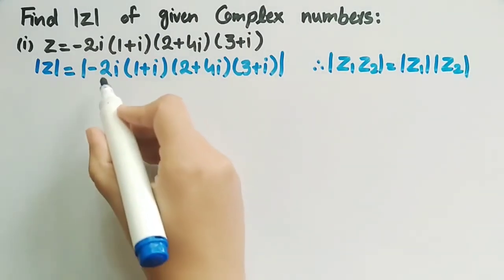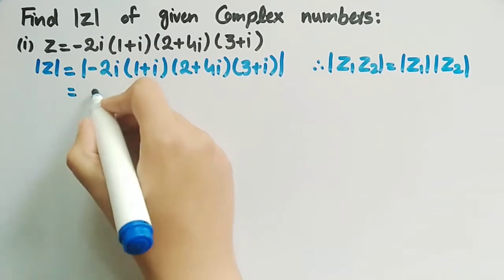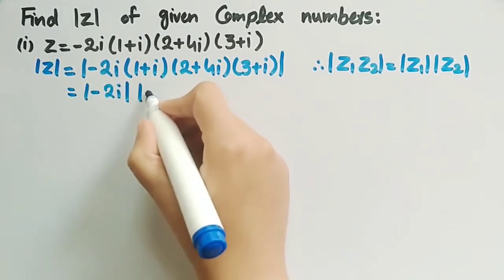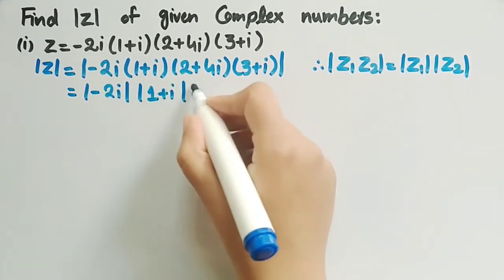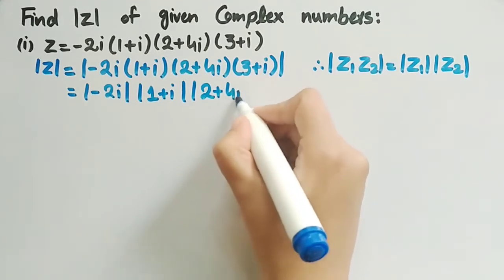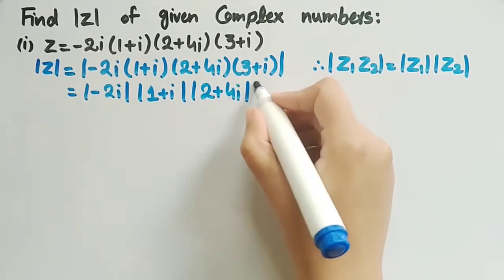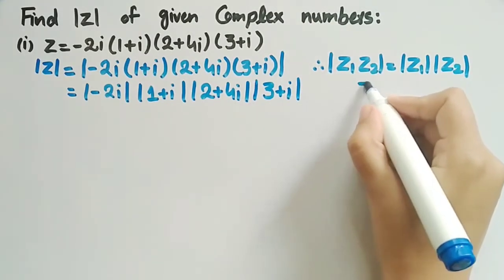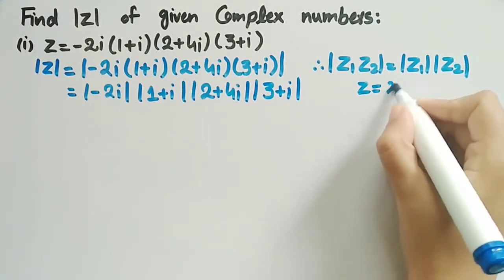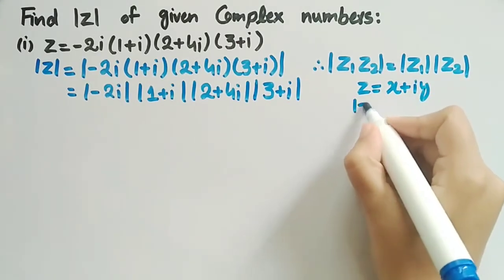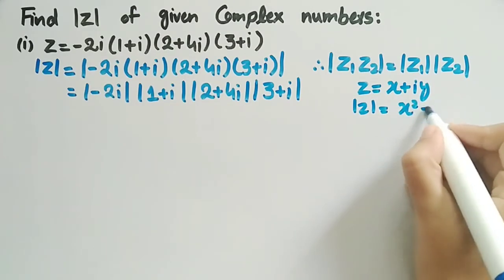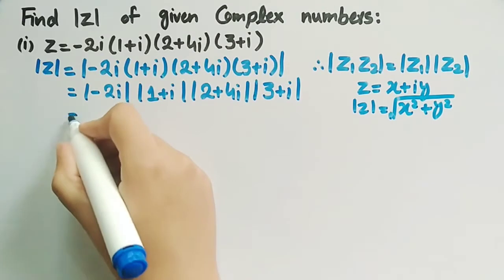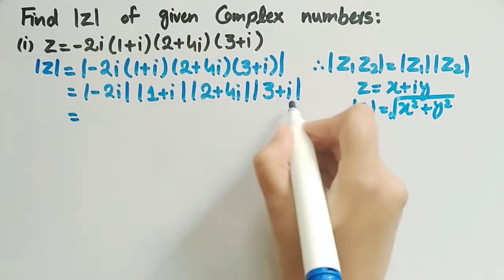So we can write their moduli separately. We get mod of minus 2 iota, into mod of 1 plus iota, into mod of 2 plus 4 iota, into mod of 3 plus iota. The modulus of any complex number z equal to x plus iota y is equal to square root of x squared plus y squared. Now we will find the modulus of each of these complex numbers.